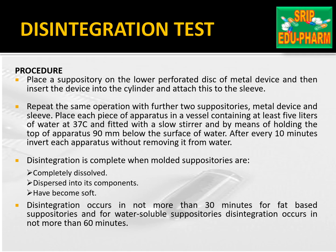2. Disintegration test. Step 1: Place a suppository on the lower perforated disc of a metal device, then insert the device into the cylinder and attach it to the sleeve. Step 2: Repeat the same operations with a further 2 suppositories, metal devices, and sleeves. Step 3: Place each piece of apparatus in a vessel containing at least 5 litres of water at 37°C, fitted with a lower stirrer, holding the top of the apparatus 90 mm below the surface of water.